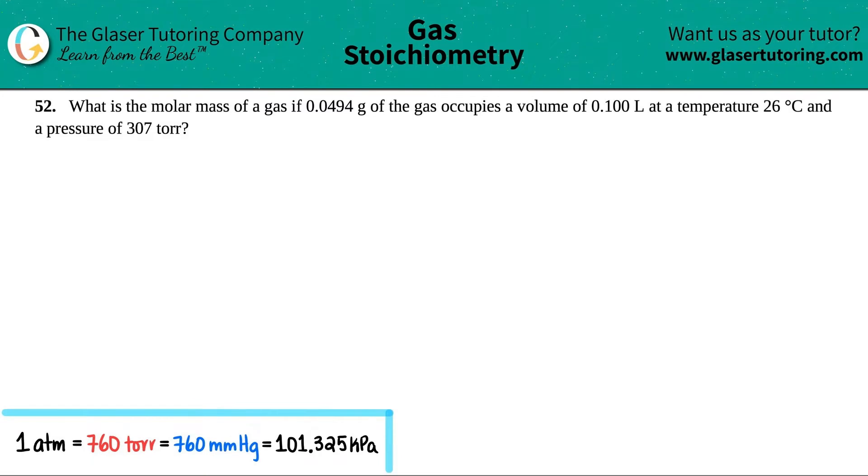Number 52, what is the molar mass of a gas if 0.0494 grams of the gas occupies a volume of 0.100 liters at a temperature of 26 degrees Celsius and a pressure of 307 torr? Okay, so remember with gas questions, we list out everything that we got and then we can come to a decision on what formula we're going to use.